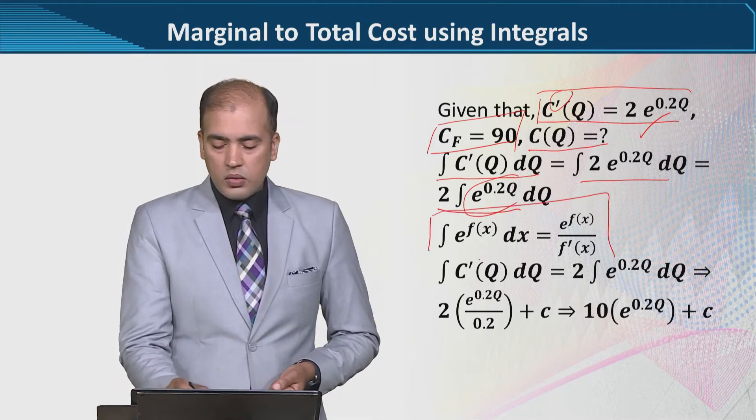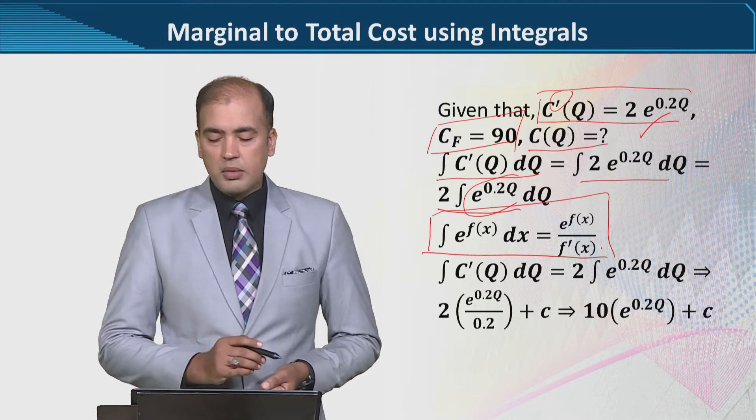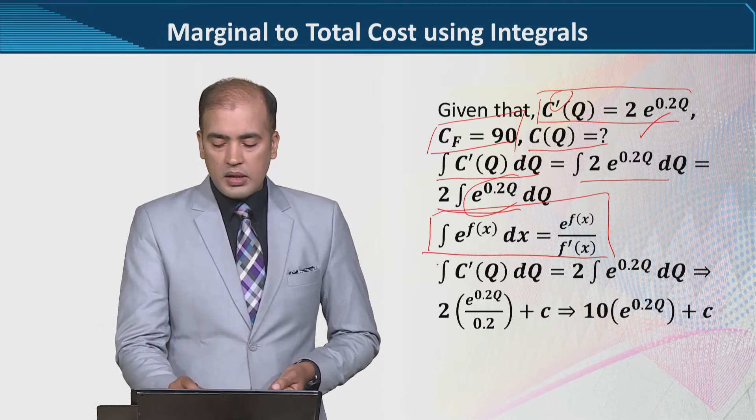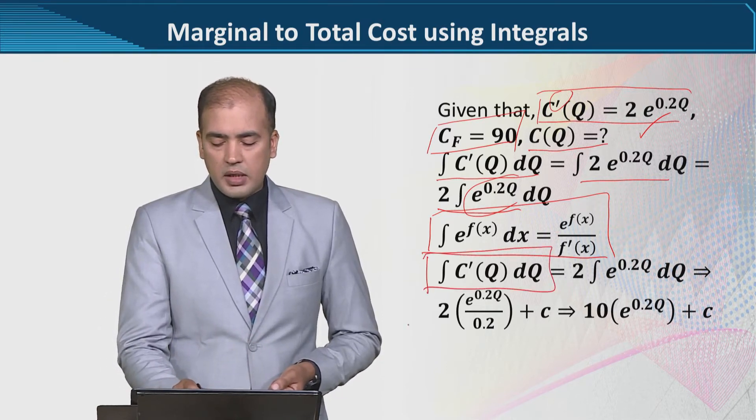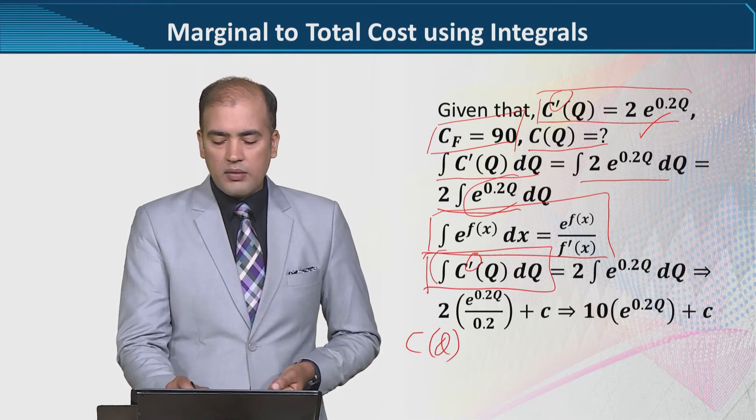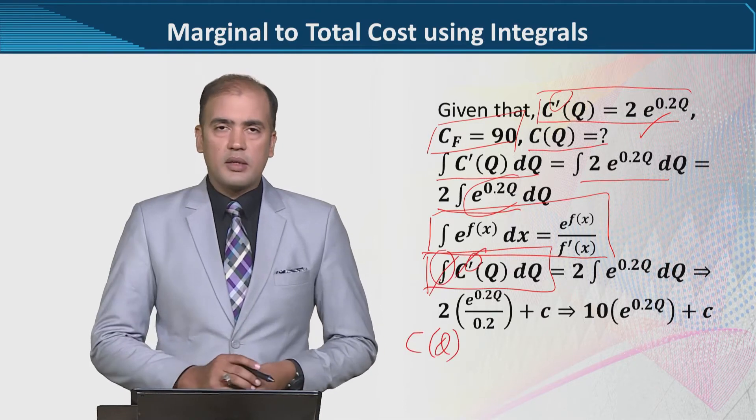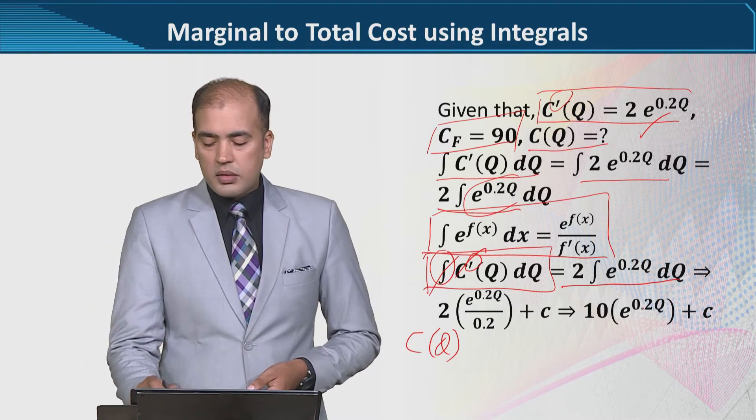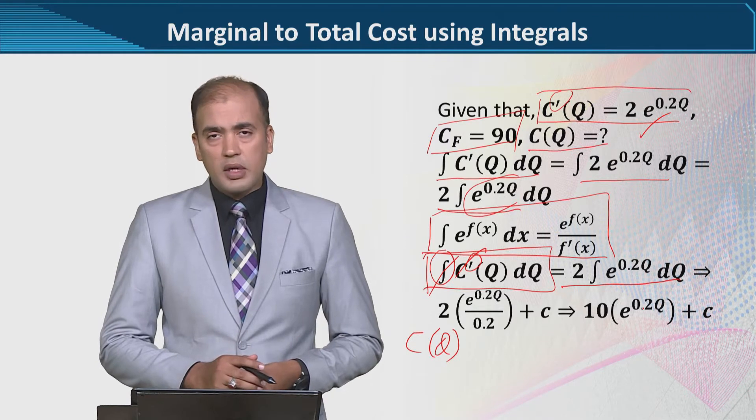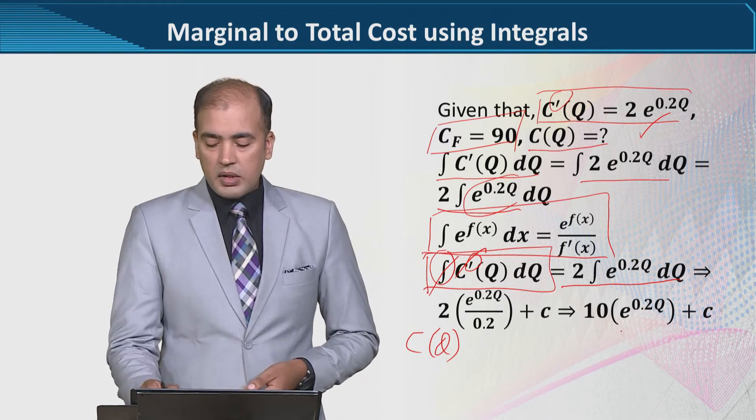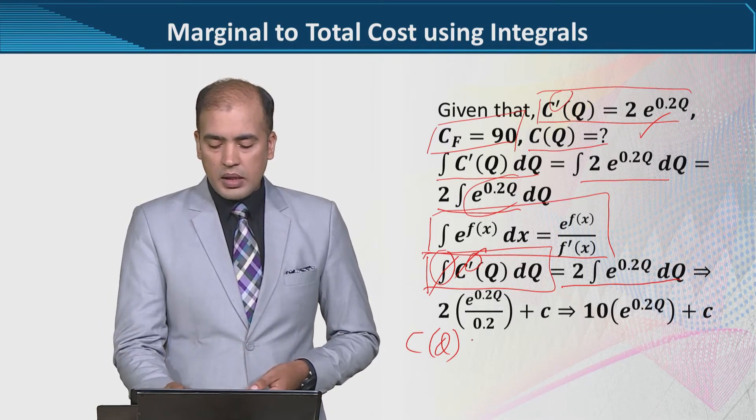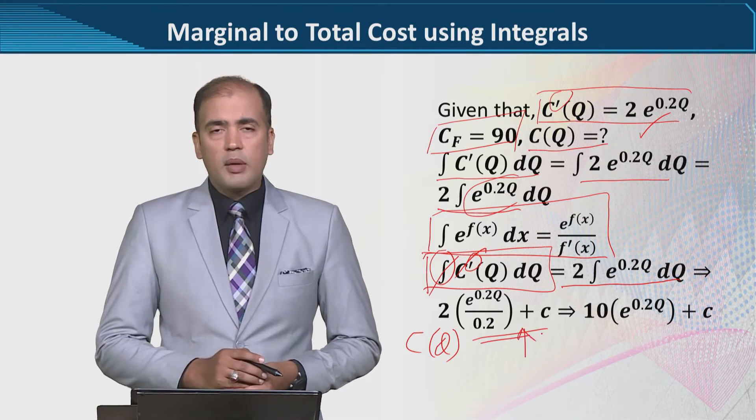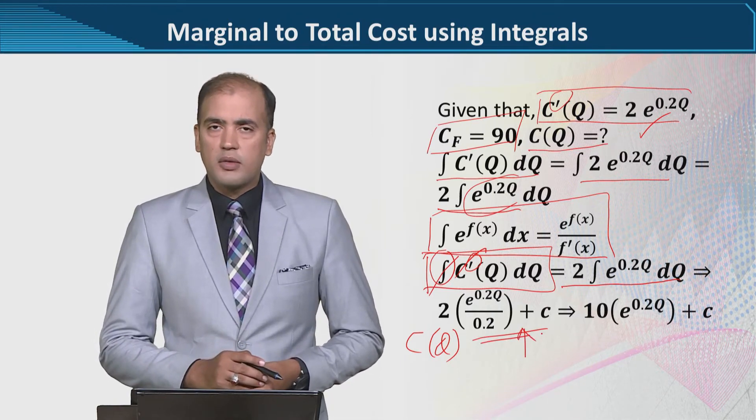So, this is that function rule that we were talking about, the natural exponential function rule. The left-hand side, it should become C(Q), right? Because the derivative will be cancelled out with the integral sign. And the right-hand side, as we were talking about, it was the exponential function. And it can be easily executed. Here, you can see, we have applied the natural exponential function rule.